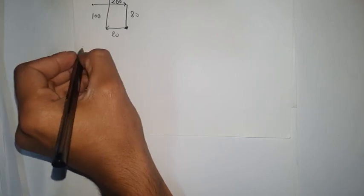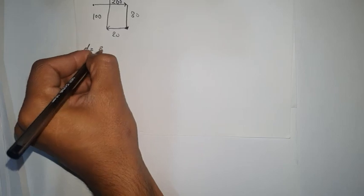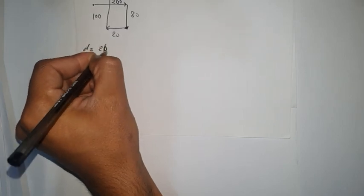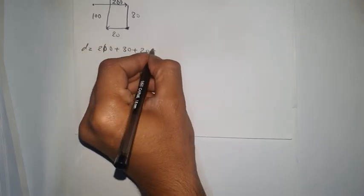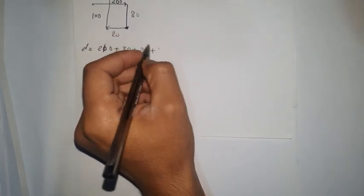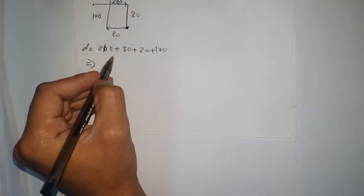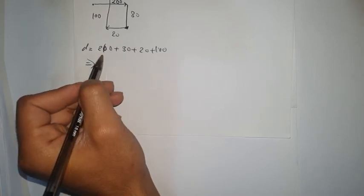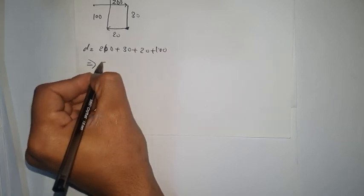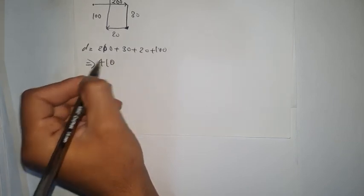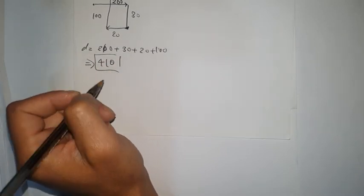To find the distance this guy traveled, we add all these numbers: 260 plus 30 plus 20 plus 100. So that gives us 410. This is the total distance this guy has traveled.